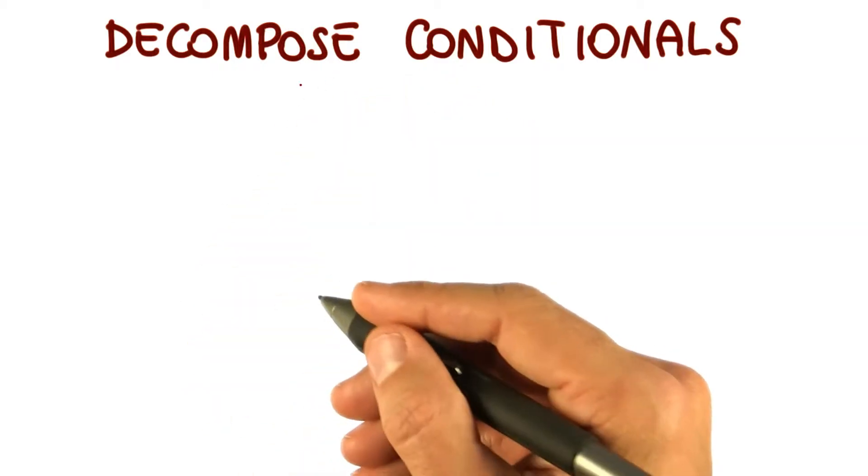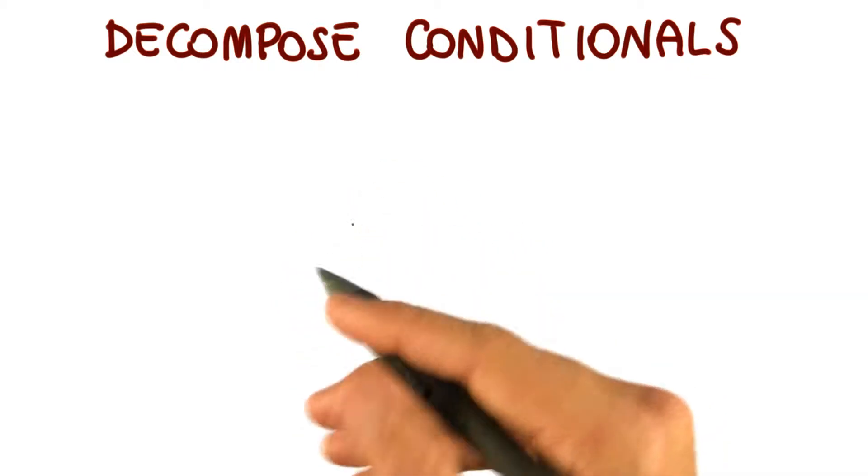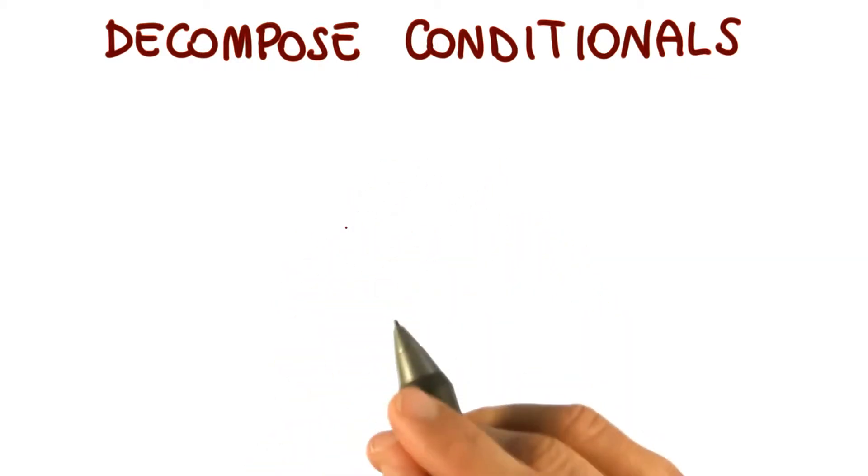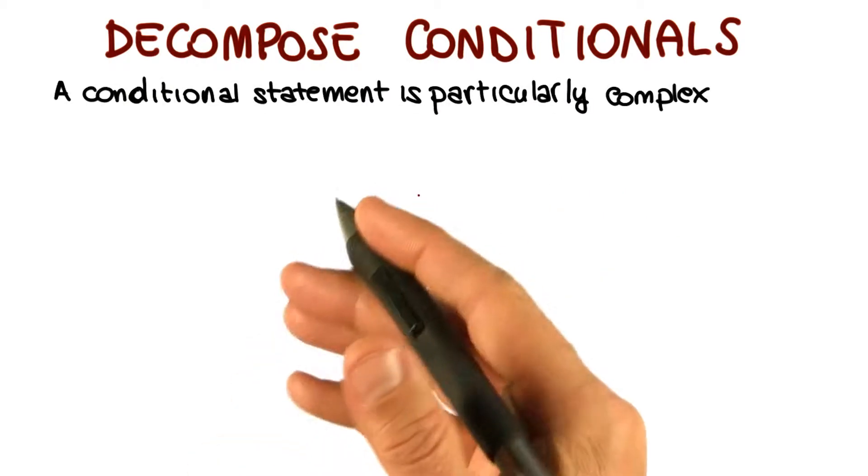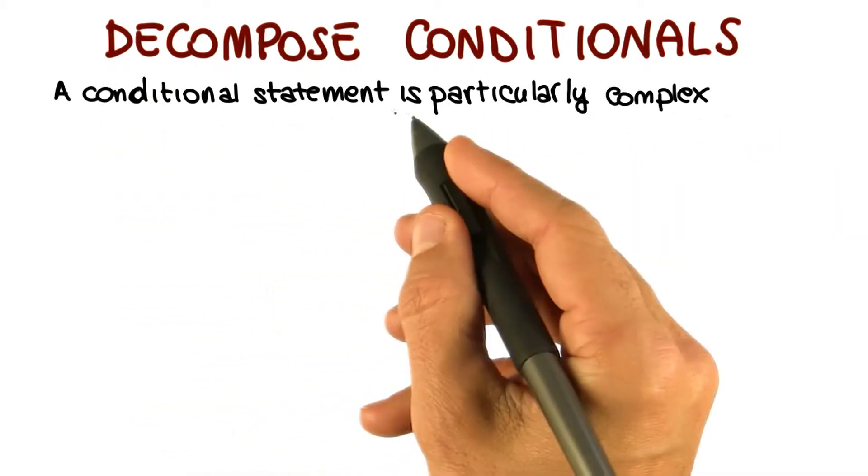Let's now see a related refactoring, which is the decompose conditional refactoring. What happens here is that in some cases, the complexity of the conditional logic in a program can make a method hard to read and understand. Specifically, we might have one or more particularly complex conditional statements.